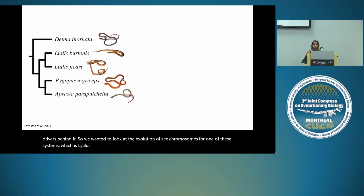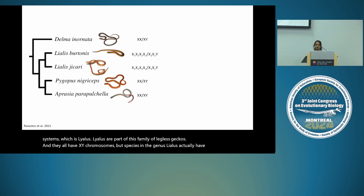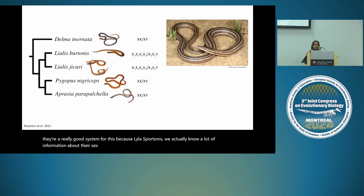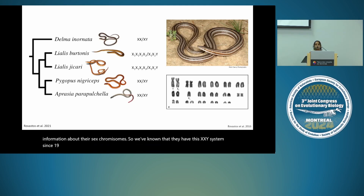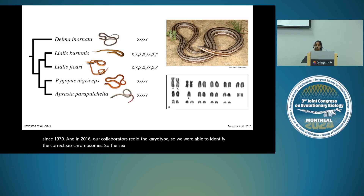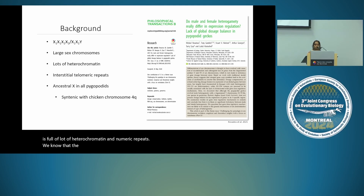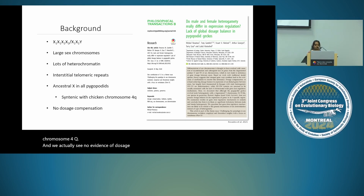Lialis bertonis is found in Australia and New Guinea and is a good system because we already know a lot about its sex chromosomes — they've been known to have the XXY system since 1970, and in 2016 collaborators redid the karyotype identifying the correct sex chromosomes. The sex chromosomes are the largest in the karyotype. We also know the Y is full of heterochromatin and telomeric repeats, the ancestral X is shared among all pygopodids and is syntenic with chicken chromosome 4Q, and there is no evidence of dosage compensation in the ancestral sex chromosomes.